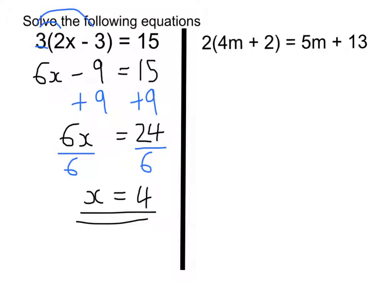Second question. First, as we said before, we're going to expand the brackets. We're going to times the 2 by 4m and 2. So 2 times 4m is 8m, 2 times 2 is 4.